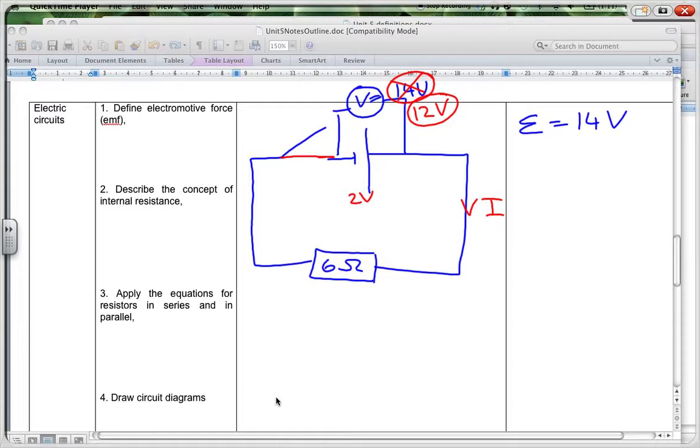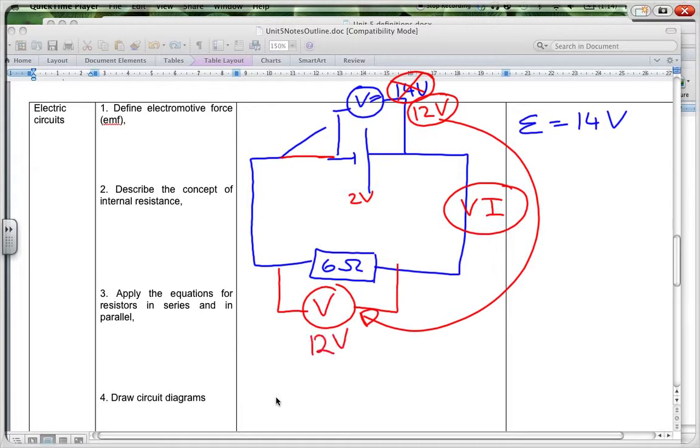Now, we can work out the current, because this 12 volts is actually for the external circuit. If I put a volt meter across here, if I measured the potential difference there, that would also read 12 volts, because the energy lost in the circuit must be the energy gained by the cell. So, we can work out the current that I is equal to V over R, is going to be 12 divided by 6 is going to equal 2 amps. So I've got a 2 amp current flowing through my circuit.